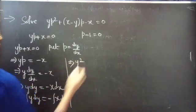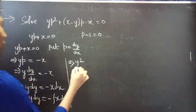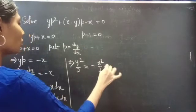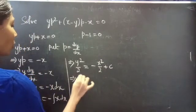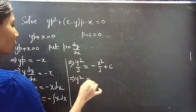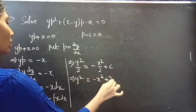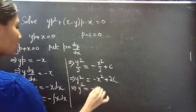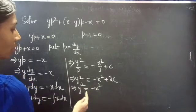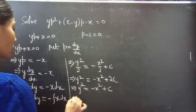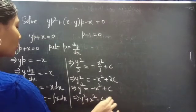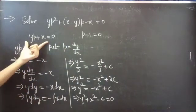Integrating: Y squared by 2 equals to minus X squared by 2 plus constant C. Then Y squared equals to minus X squared plus 2C. Writing 2C as C: Y squared equals to minus X squared plus C. Taking both terms to the LHS, you get Y squared plus X squared minus C equals to 0, which is the solution for YP + X equals to 0.